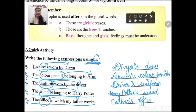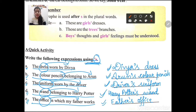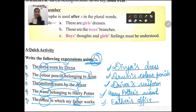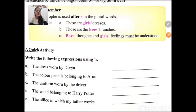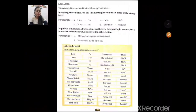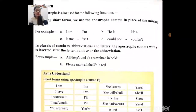Note: in all these answers we used apostrophe 's' because all the owners are singular — Divya is one girl, Arun is one boy, driver is one person, Harry Potter is one person, and father is singular. So with singular we use apostrophe 's', and with plural we place apostrophe after 's'.